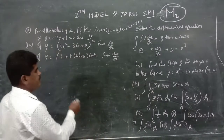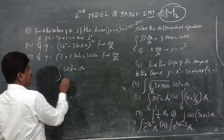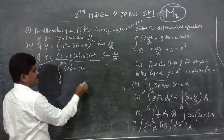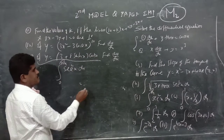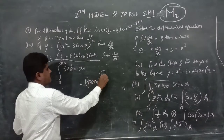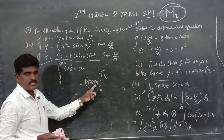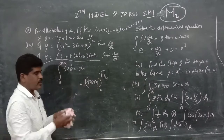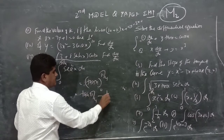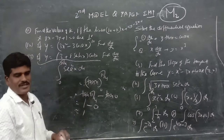Fifth problem: evaluate the definite integral of sec²x dx from 0 to π/4. The integration of sec²x is tan x. Applying the limits from 0 to π/4: tan(π/4) minus tan(0) equals 1 minus 0 equals 1. The answer is 1.